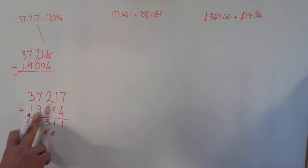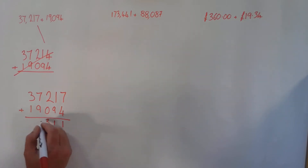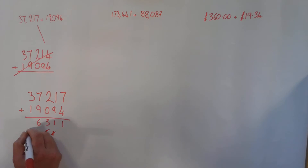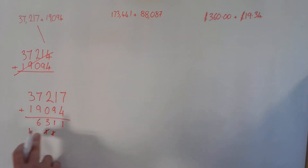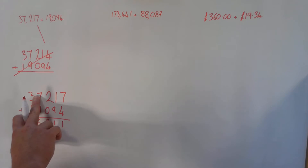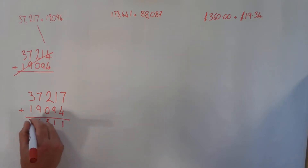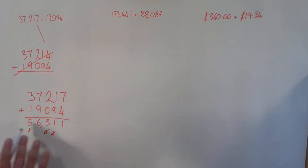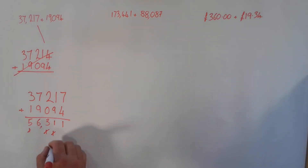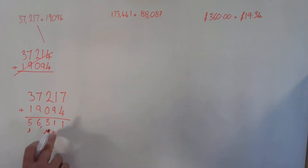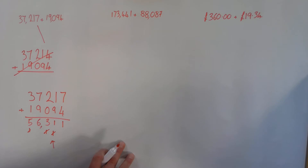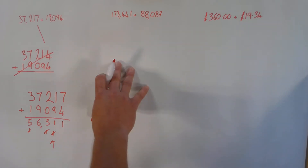In the thousands column, seven thousands plus nine thousands gives me sixteen thousands — the six goes down and I carry one ten-thousand over. Then in the ten-thousands column I have three ten-thousands plus one ten-thousand plus one ten-thousand, giving me five ten-thousands. That gives me my final answer: 56,311. When carrying, you only carry one column to the left, and when you've added the carried digit on, make sure you cross it off so you're certain it's been included in the calculation.